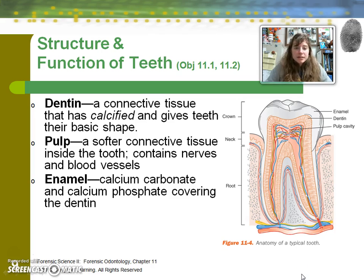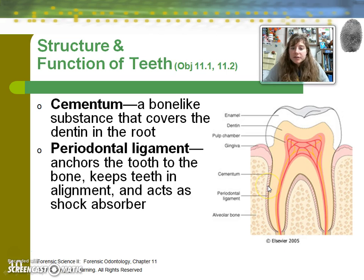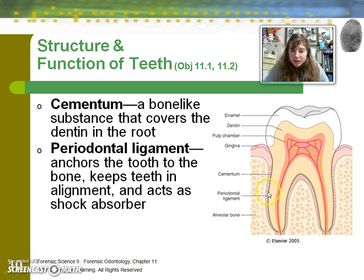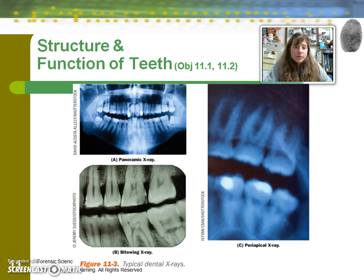Here's a look at those three layers again: dentin, pulp, and enamel. The cementum is a bone-like substance that covers the dentin — this pink layer — within the root. And then the periodontal ligament is what anchors the tooth to the bone of the jaw, keeps alignment, and acts as a shock absorber.